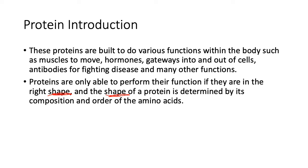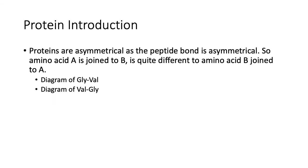Proteins are asymmetrical as the peptide bond is asymmetrical. So amino acid A is joined to amino acid B, it's quite different to amino acid B joined to A.